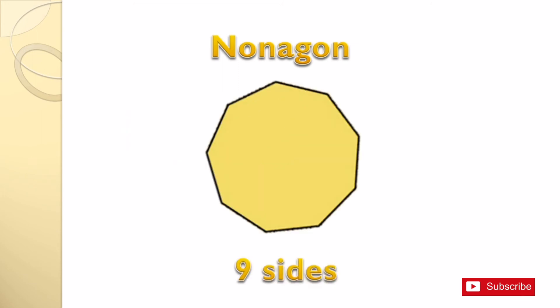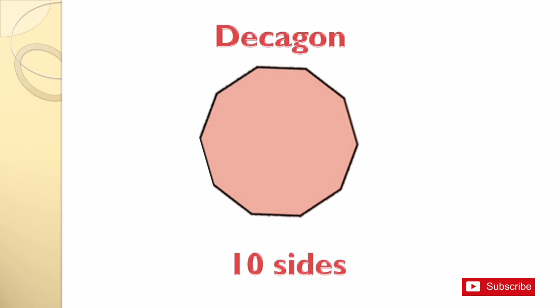A nonagon has nine sides. A decagon has ten sides.